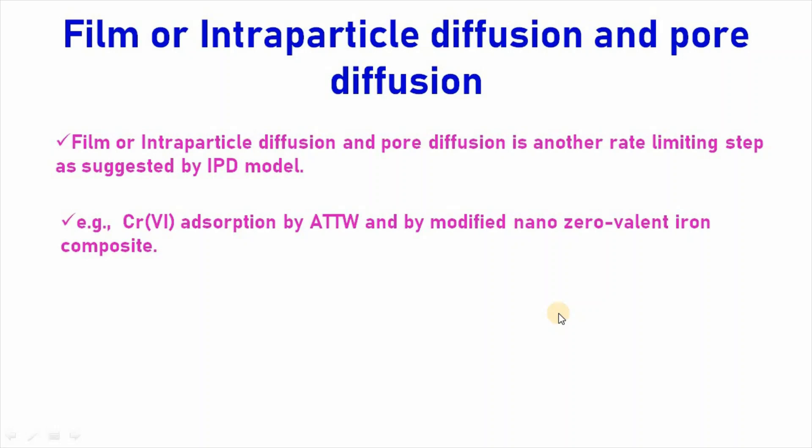Then comes film or inter-particle diffusion and pore diffusion. It is another rate limiting step as suggested by inter-particle diffusion model. For example, chromium adsorption occurred by T-waste and modified nano-zero-valent iron composite using film or inter-particle diffusion or pore diffusion.